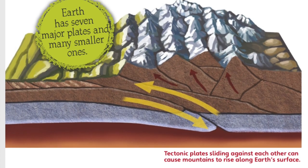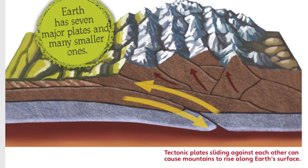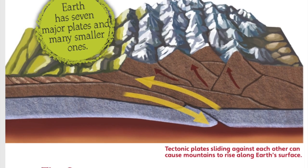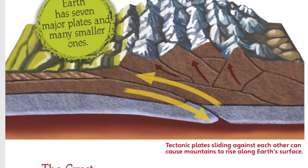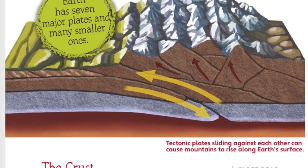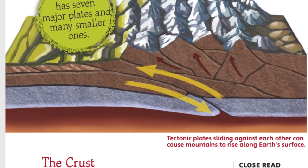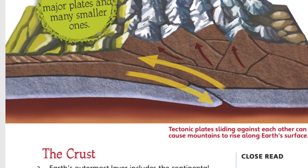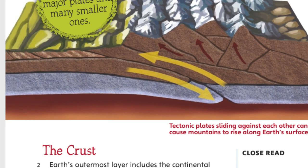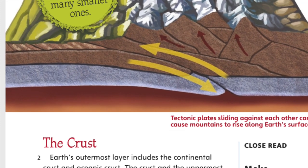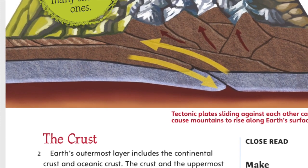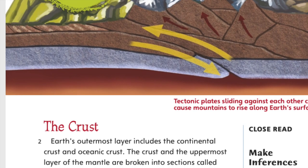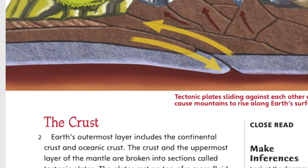The crust. Earth's outermost layer includes the continental crust and oceanic crust. The crust and the outermost layer of the mantle are broken into sections called tectonic plates. The plates rest on top of a more fluid layer of mantle and are constantly moving.